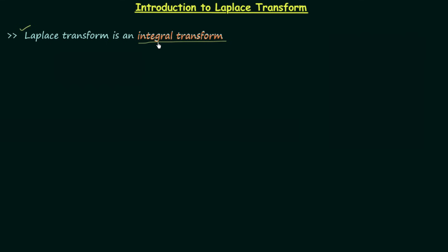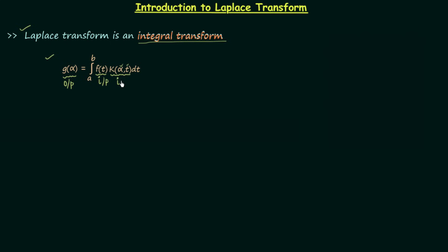So what do we mean by integral transform? A transform having this form is known as integral transform. In this there are three functions. The first one is g(alpha), it is the function of alpha and this is the output. The second function is f(t), it is the function of time t and this is the input. And the third function is the function of both alpha and t, and this is known as the integral kernel.